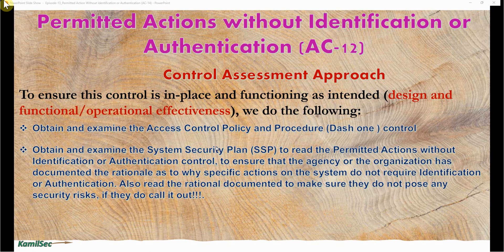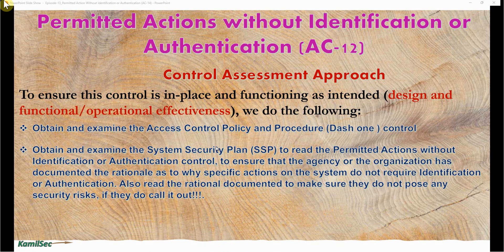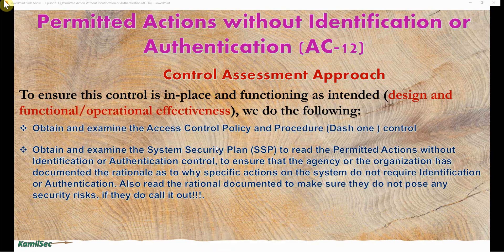Also read the rationale carefully to make sure the actions do not pose any security risk. If they do, call it out. Sometimes in the past there was a need for certain actions to be performed on the system, but as time goes on the business need for that action is no longer required or feasible. However, these controls are still being left on or implemented in the system. If the rationale is no longer valid, you'll have to call it out and say this is what it used to be but is no longer needed, so it has to be removed. The documentation also has to be reviewed and updated to ensure it no longer states that the action without identification and authentication is required on the system.